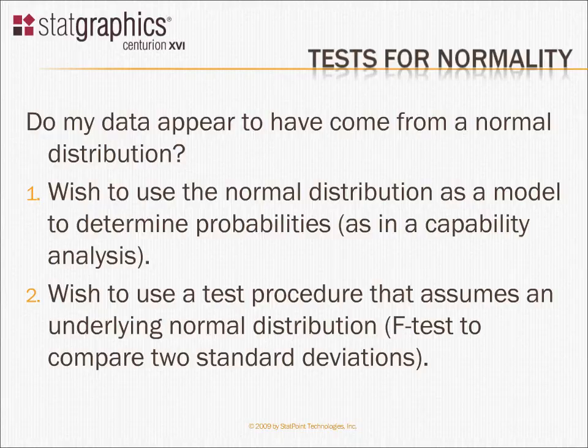For example, you may have a set of specification limits for a variable and want to estimate the percentage of the time that you'll be within the specification limits. If the normal distribution provides a good model for your data, then you can calculate probabilities from that normal distribution to estimate how often you'll be within spec.